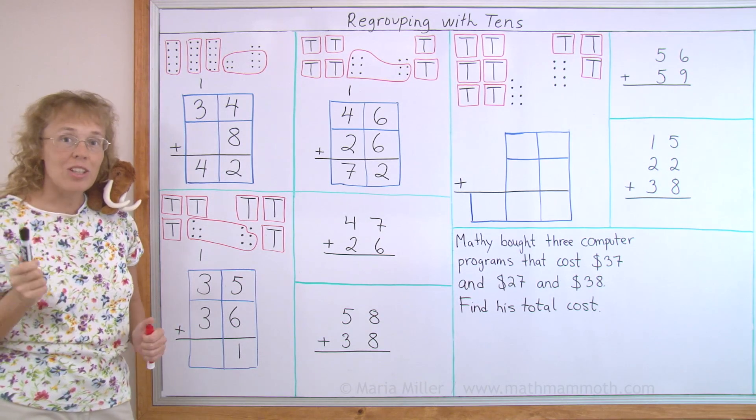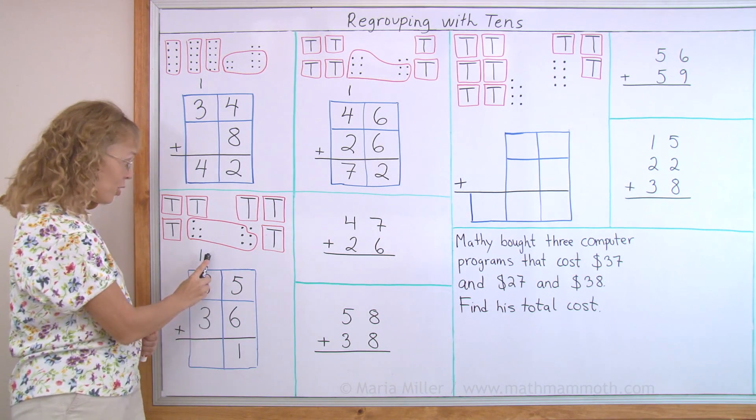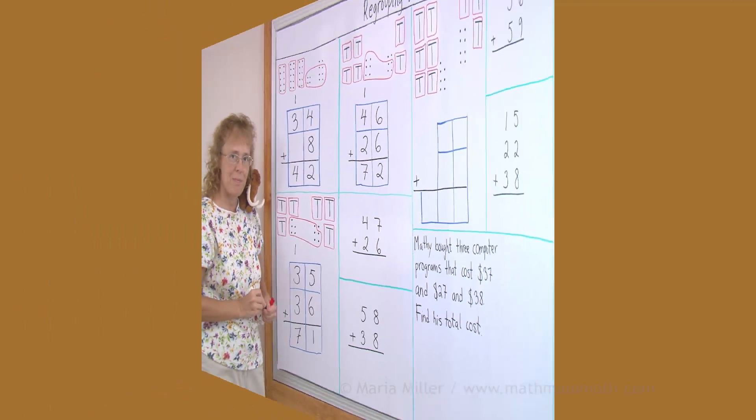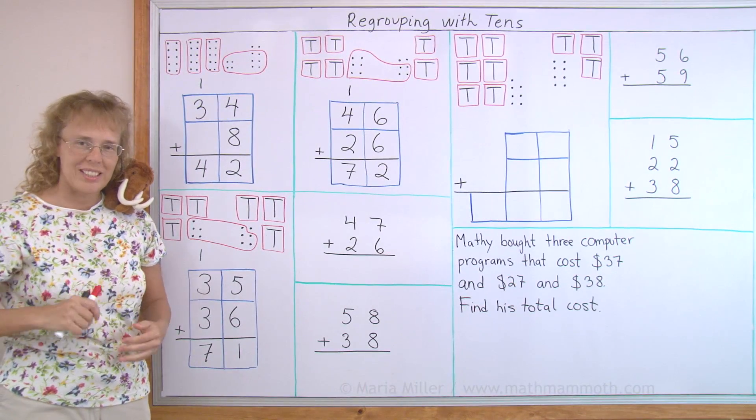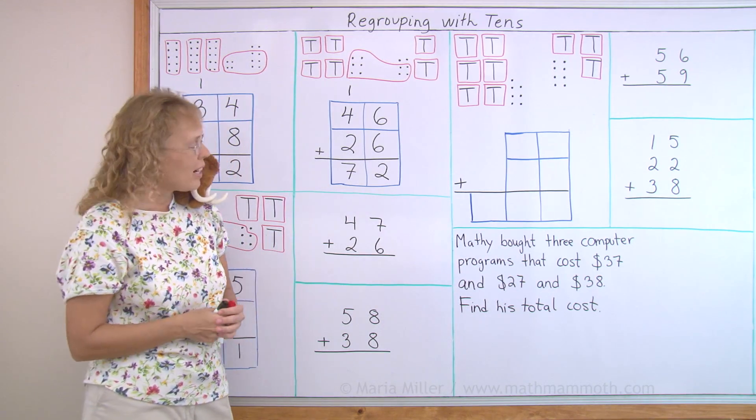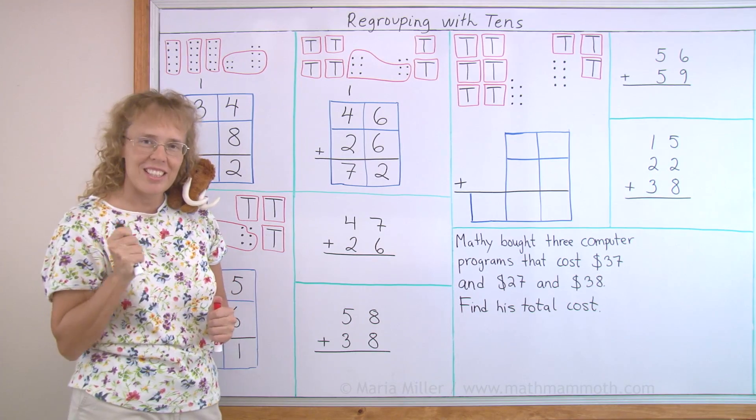And now I add all those tens. The three tens, the three tens, and the new ten that I got. So I get seven tens here again. Seventy-one. I hope this explains it. Let's try it here now. I don't have a picture here, but it works the same way. And it's not that difficult.